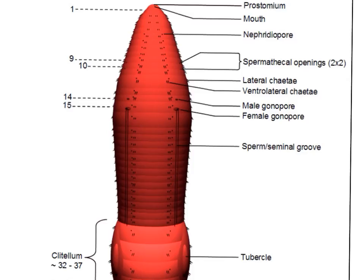Here we can see the prostomium and the mouth. We can see those nephridiopores. We can see the little setae — two per side, or four per segment — and we can see the clitellum.